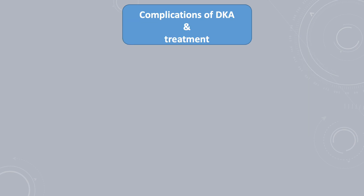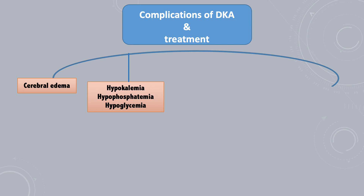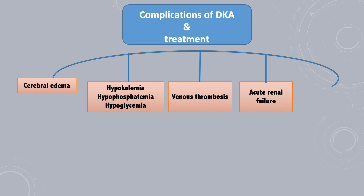DKA patients can develop complications because of DKA itself or because of the treatment. These include cerebral edema, which is a very life-threatening condition and can lead to death. Electrolyte imbalances including hypokalemia, hypophosphatemia, and hypoglycemia. Venous thrombosis because of dehydration and increased blood viscosity. And acute renal failure because of severe dehydration and hypoperfusion. Some patients can also develop pancreatitis.